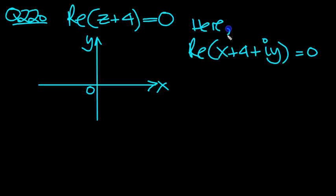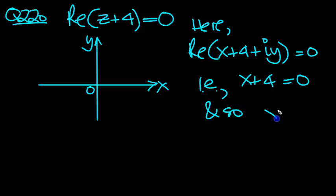So here we have this condition. In other words, X plus 4 equals 0, and so X will equal minus 4. So we can draw a vertical line at minus 4.